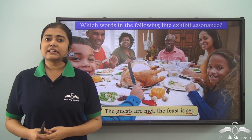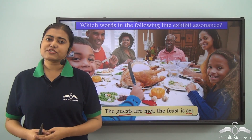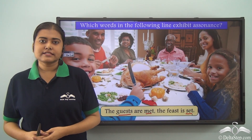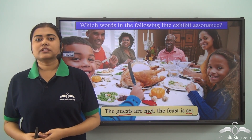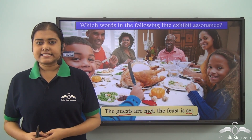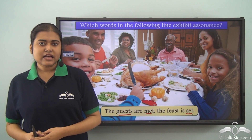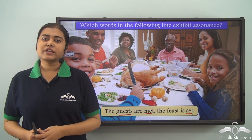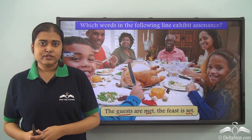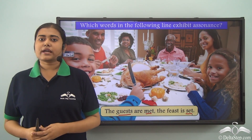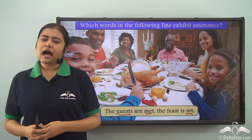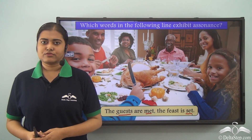Today, we have learned about this special feature of English language called assonance — the repetition of similar or identical vowel sounds in a sequence of nearby words. Now that you have learned assonance, you can look for more examples and see how many you can find.